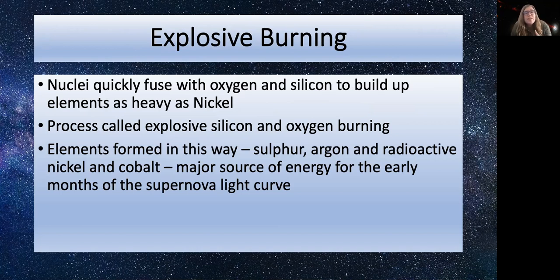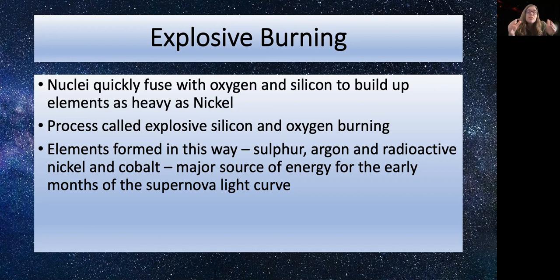Nuclei quickly fuse with elements like oxygen and silicon, building up elements as heavy as nickel — a process called explosive silicon and oxygen burning. Elements formed this way include sulfur, argon, and radioactive elements like nickel and cobalt, which are a major source of energy for the early months of the supernova light curve. Eventually, after a few hours, the shockwave reaches the surface of the star and expels all the stellar material — all the elements created by nuclear fusion during the star's main sequence and red giant phases, plus elements just created by the supernova explosion — all expelled into the interstellar medium.